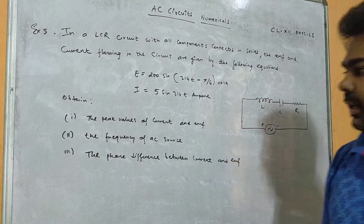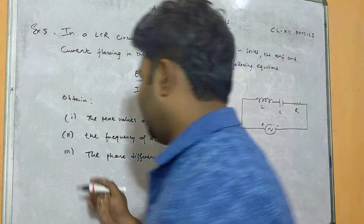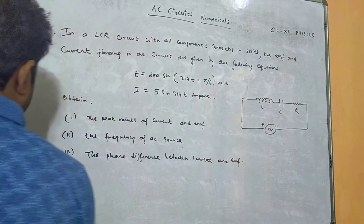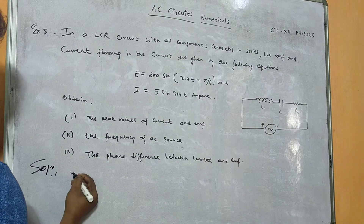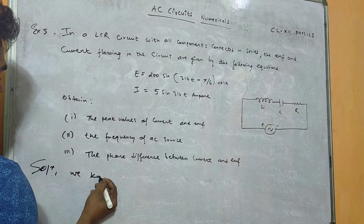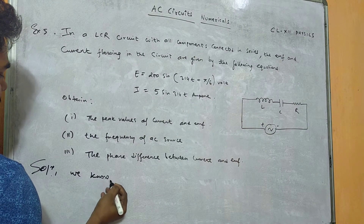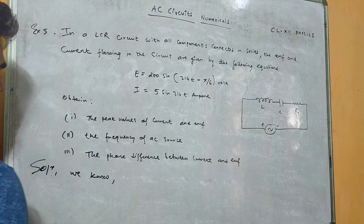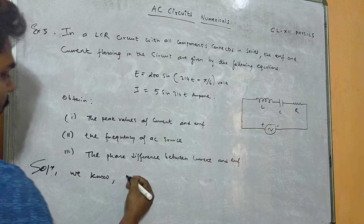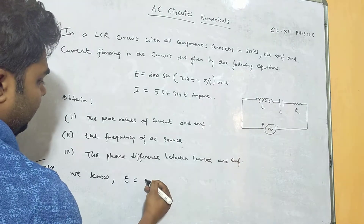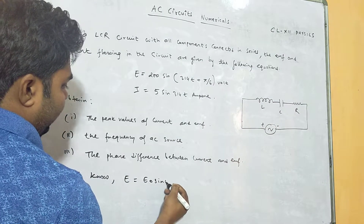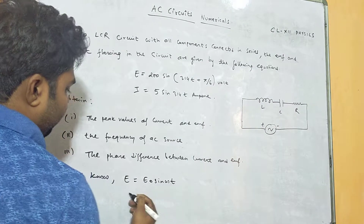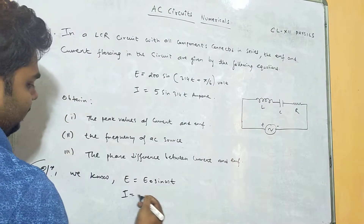We know the alternating voltage is given by E equals E-naught sine omega-t, and current is given by I equals I-naught sine omega-t. These are our standard reference equations.